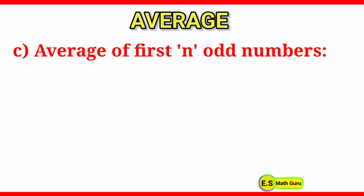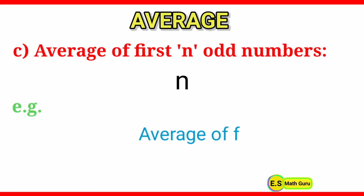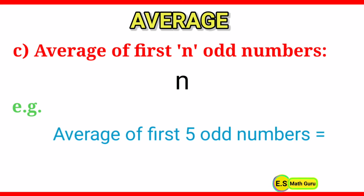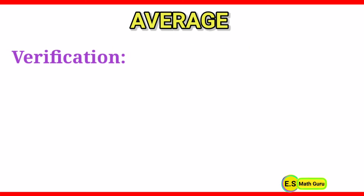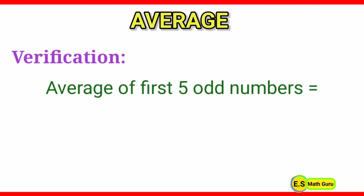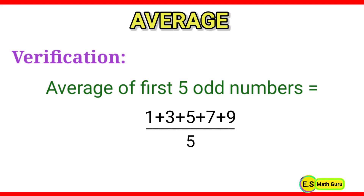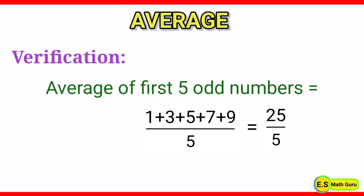Next, the shortcut method to find the average of first N odd numbers is N. For example, the average of first 5 odd numbers is equal to 5. Now let us verify it: the average of first 5 odd numbers is equal to (1+3+5+7+9)/5, which is equal to 25/5, which gives 5. Therefore it is verified.